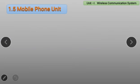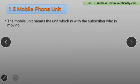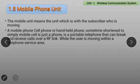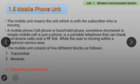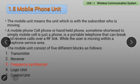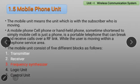In this video, we will see the next block diagram of the Mobile Unit. As you know, the Mobile Unit consists of 5 blocks: Transmitter, Receiver, Frequency Synthesizer, Logic Unit, and Control Unit. In this video, we will discuss the Transmitter and Receiver. Let us start.